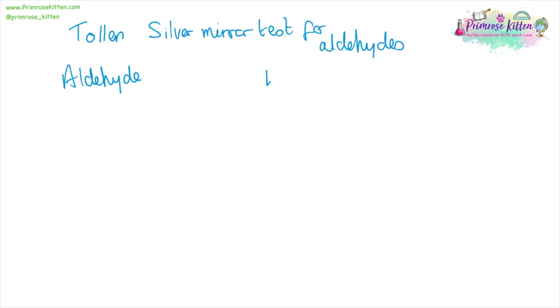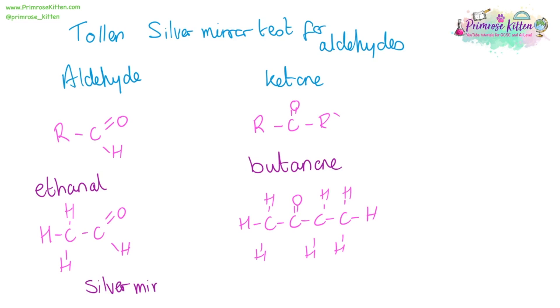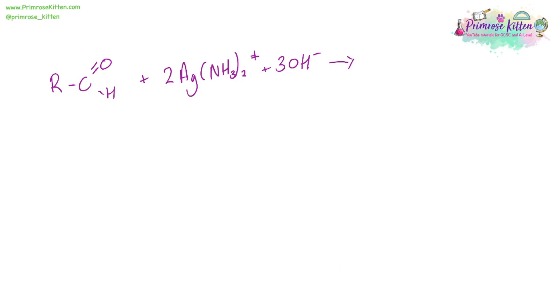This is one way we can tell the difference between an aldehyde and a ketone. The aldehyde will give a positive result showing a silver mirror, whereas the ketone won't. Here is the reaction for what's going on. And we can see it releases silver ions and this is what you will actually see when you get a positive result in this reaction.